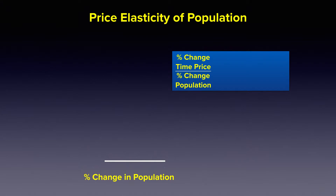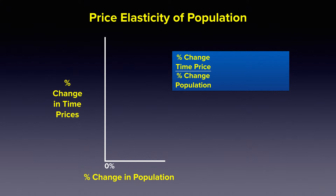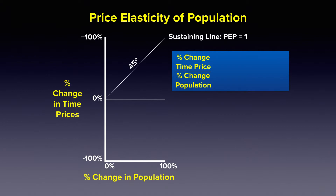Let's graph the percentage change in population and the percentage change in time prices, setting the population axis from zero to 100% and the time price axis from plus 100% down to minus 100%. We draw a 45-degree identity line, which we define as sustaining, where the PEP is equal to one. Above that line, we experience decreasing abundance — a condition where prices are increasing faster than population.